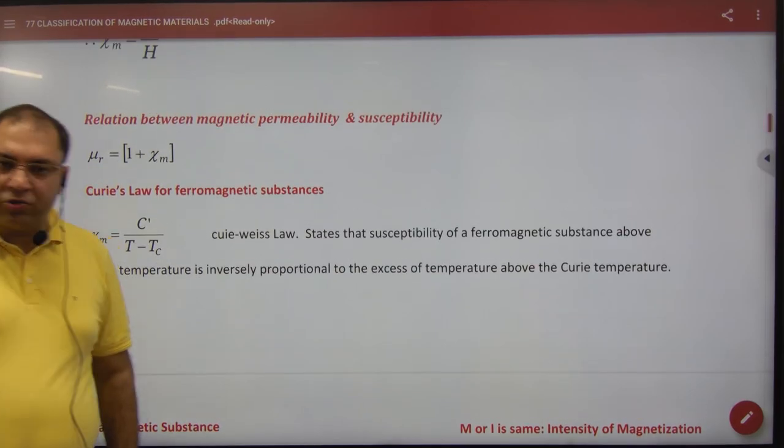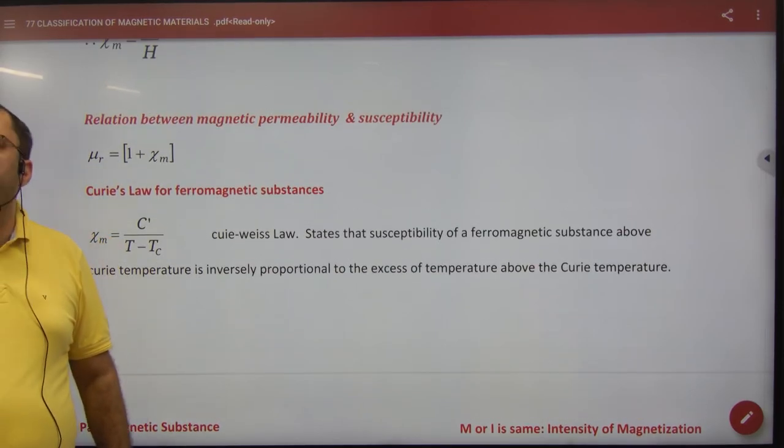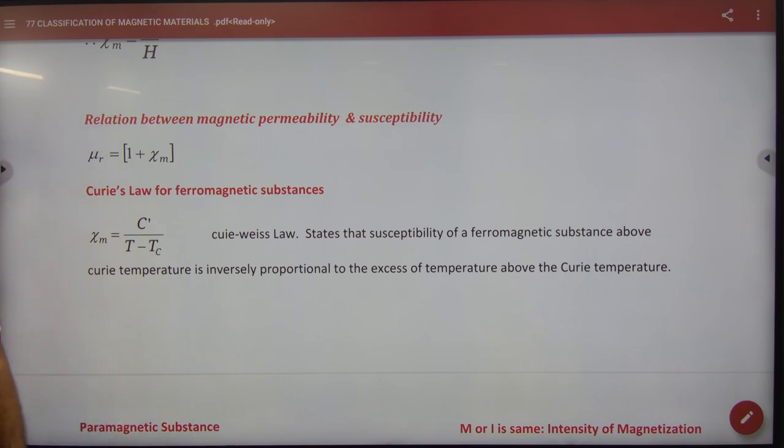Curie's Law. Actually, I have done Curie's Law. It's very basic. Chi is equal to C divided by T.